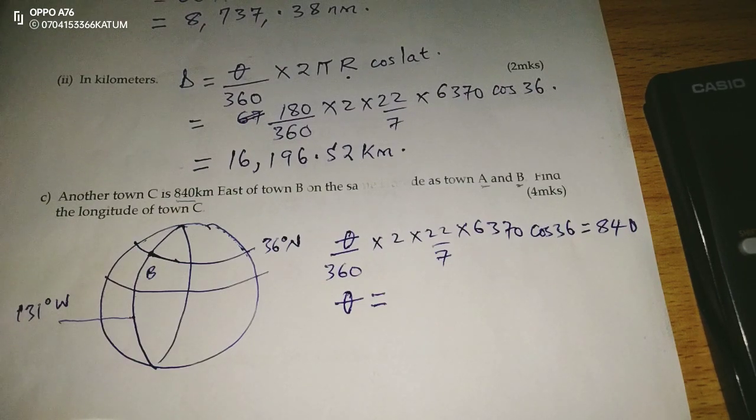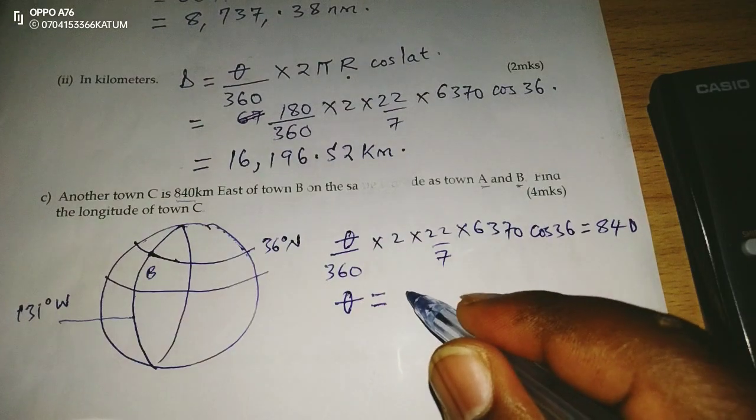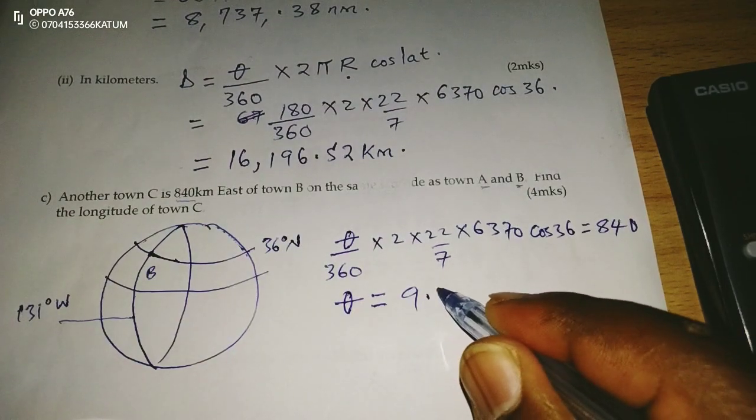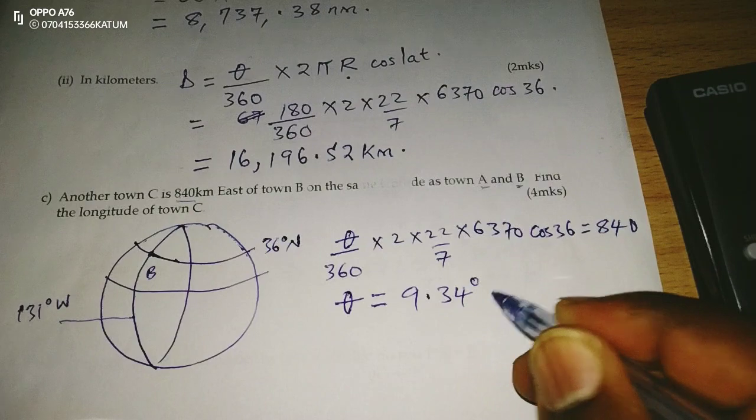cosine of 36. This gives me exactly 9.34 degrees.